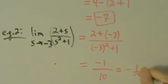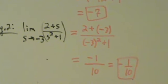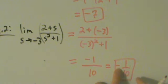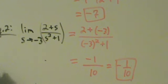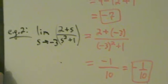So this is negative 1 tenth. It's more common to have the minus sign off the numerator, but it doesn't really matter. That's Example 2.